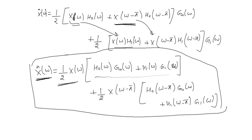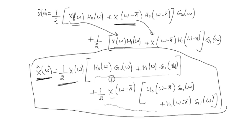To achieve perfect reconstruction, we need to design the synthesis filters such that the aliasing term is cancelled. The condition is to choose G0(ω) and G1(ω) appropriately given H0(ω) and H1(ω) = H0(ω−π), so that the aliasing is suppressed and the passband reconstructs the original signal.